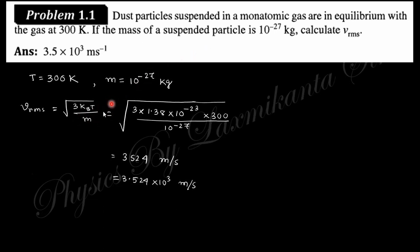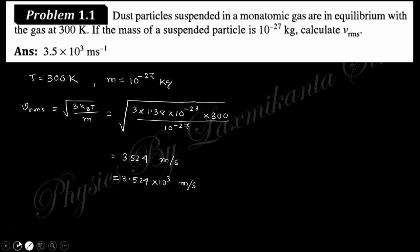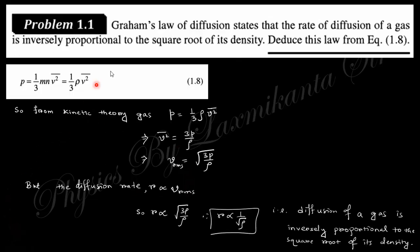Putting in the values: kb is Boltzmann's constant 1.38 × 10⁻²³ in SI units, temperature is 300 K, and m is 10⁻²⁷ kg. Substituting these values, you can find the RMS velocity to be 3.524 × 10³ meters per second.